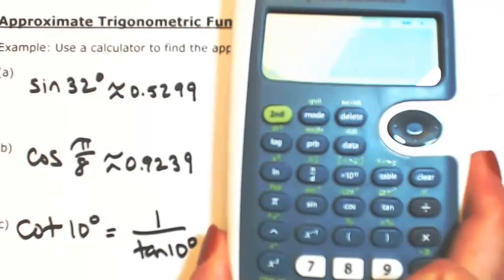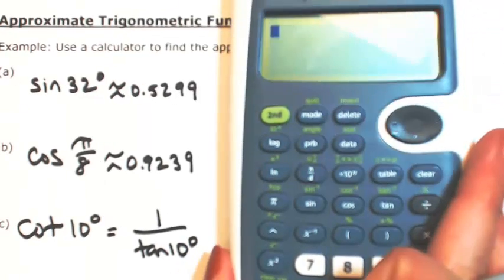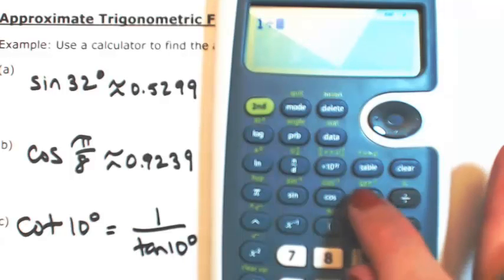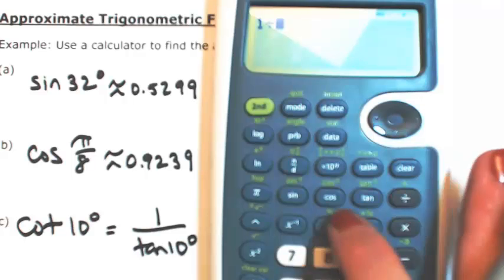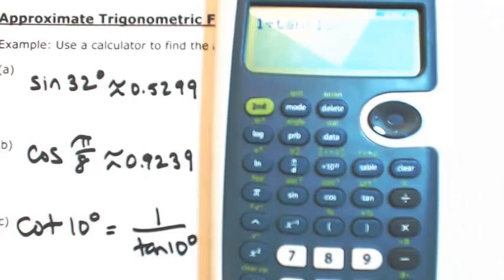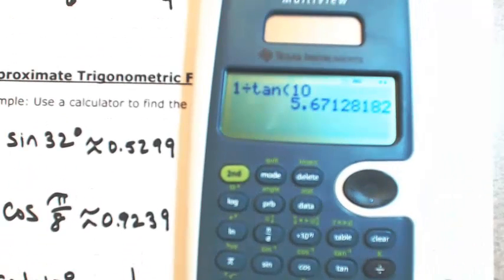So on my calculator, I do not hit second tangent—that's inverse. I'm just going to do 1 divided by tangent. And then mode needs to go back into degrees. And so that's about 5.671.